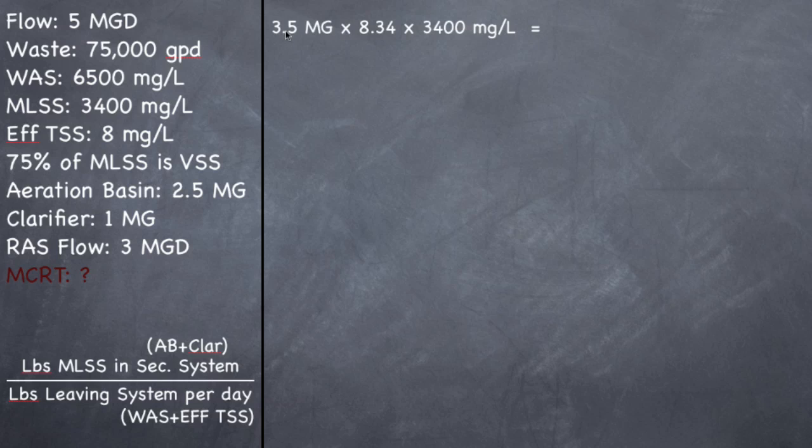So we take 3.5 million gallons. Now some of you might be wondering where did I get this 3.5? I don't see a 3.5 million gallons on anything they gave me. Well remember, it's aeration basin plus the clarifier, so I went ahead and added those two together. You can do them separately, figure out how many pounds are in the aeration basin and how many pounds are in the clarifier and then add them, or you can just add their volume in the beginning and only do one pounds formula instead of two. This is kind of a faster way.